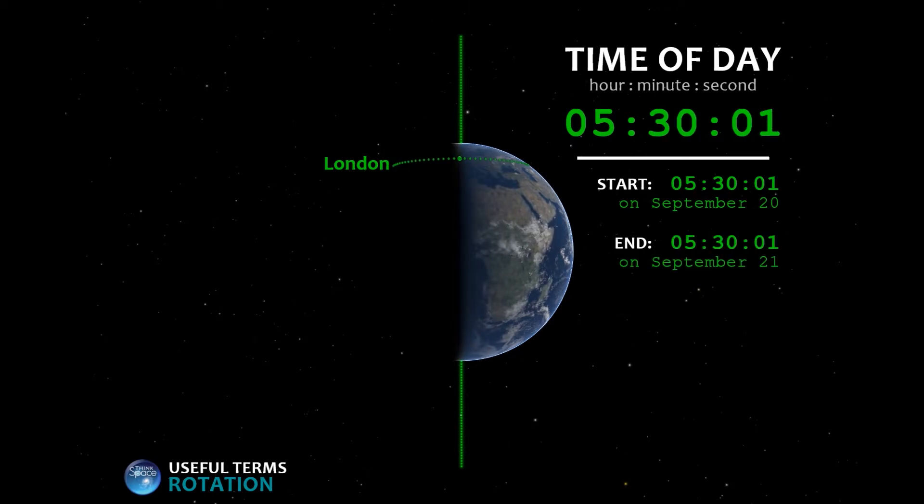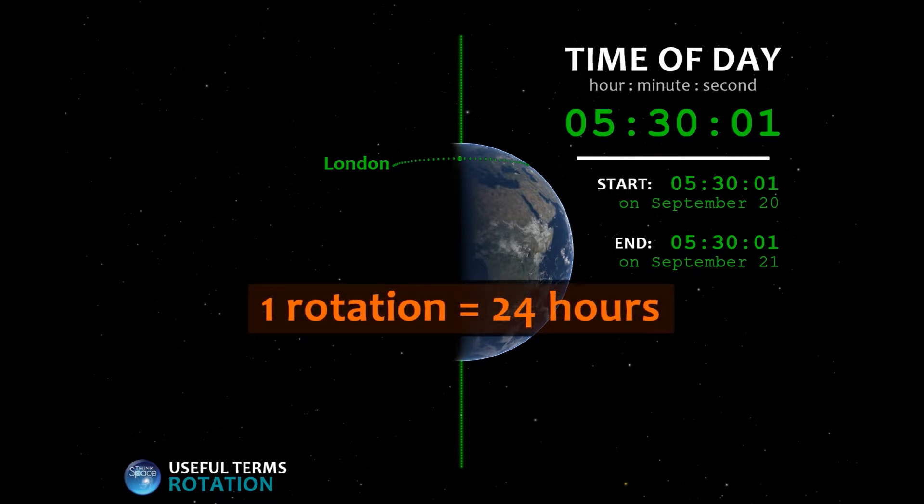Done! We started at 5:30 and 1 second in the morning on September 20th, and we completed one rotation at 5:30 and 1 second in the morning on September 21st. One rotation of the Earth takes 24 hours, which you know is one day.